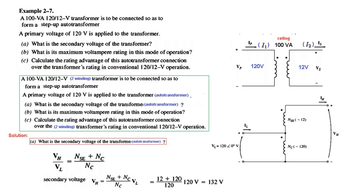And now we will plug in the values. The primary is 120 and the secondary is 12. So the turn ratio will also be same. So we will, for the secondary or SE, we will write 12. And for the primary we will write 120 divided by 120 and multiply by the low side voltage 120. And therefore the output voltage or VH will be 132 volts. So this is the first part.